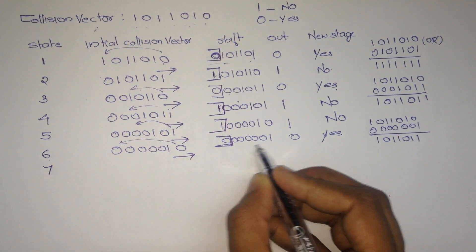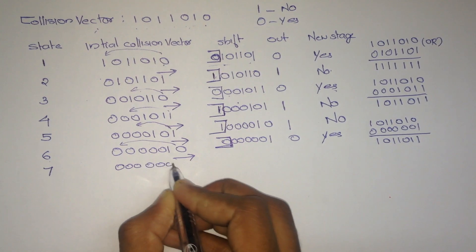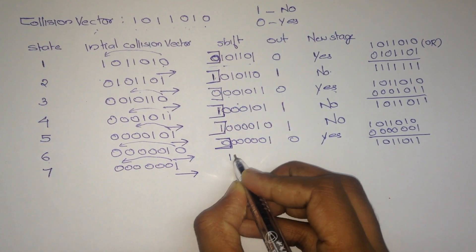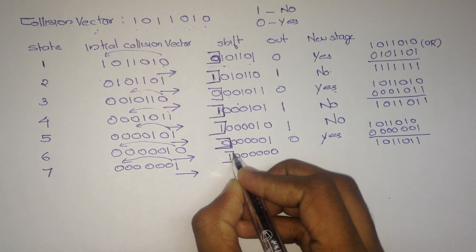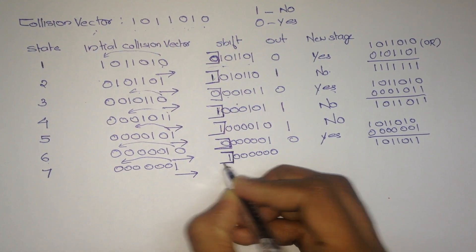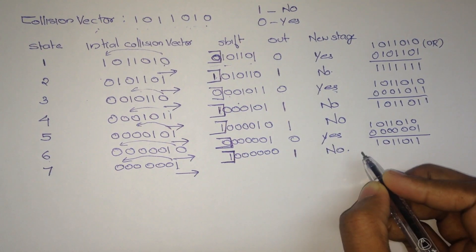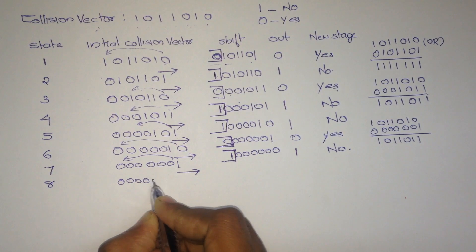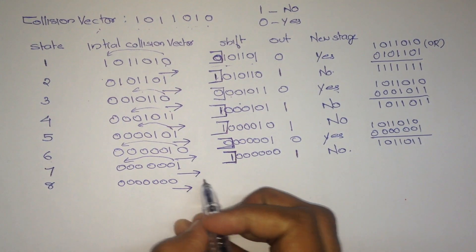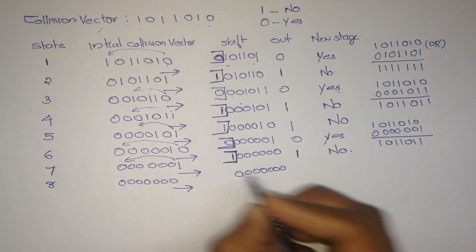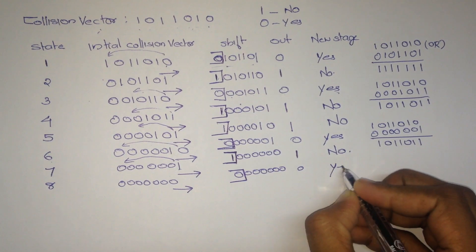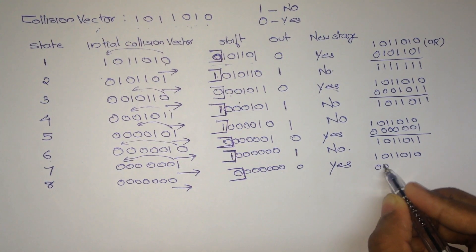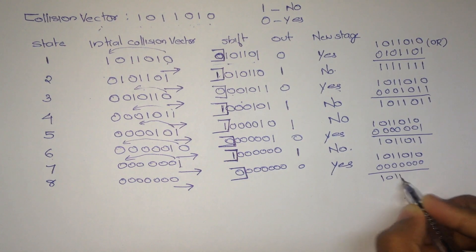And in the next state, we have to write this value: 0, 0, 0, 0, 0, 0, 0, 1. Again we perform right shift; the 1 will become at first: 1, 0, 0, 0, 0, 0, 0. We have to out this value, that is 1. Therefore no new state occurs. After performing all operations through these values, we will get the initial collision vector itself.